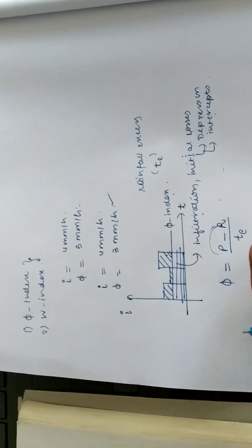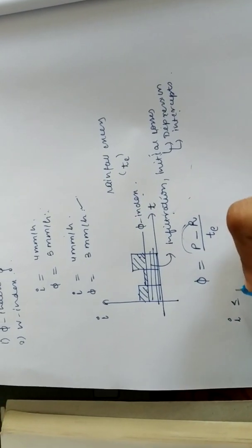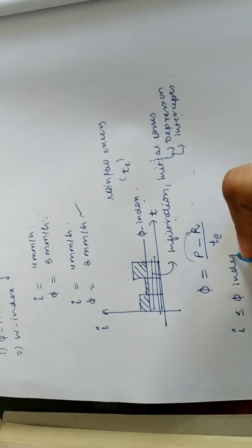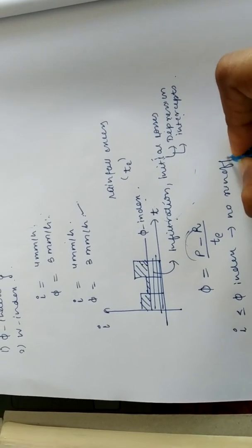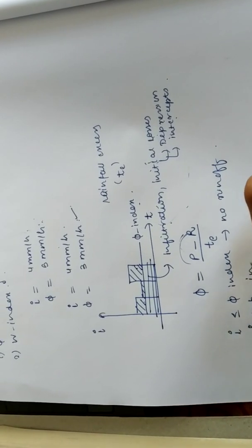These are those two conditions. That is if the intensity of rainfall is less than or equal to phi index, there will be no runoff. If the intensity is greater than phi index, there will be runoff.